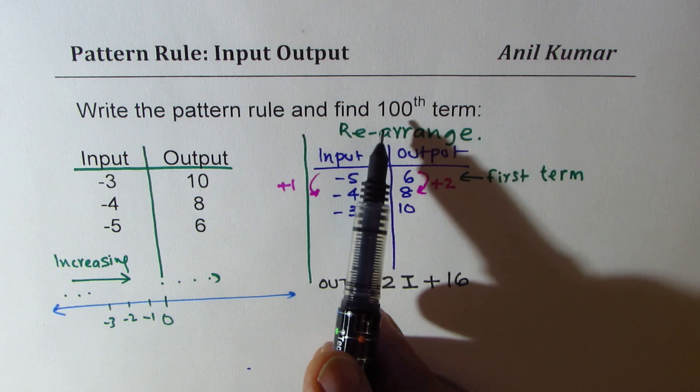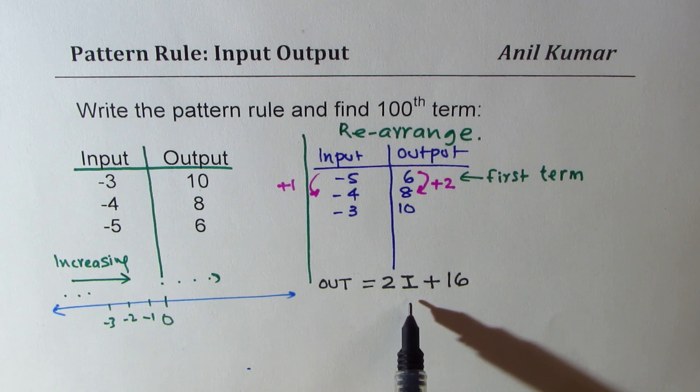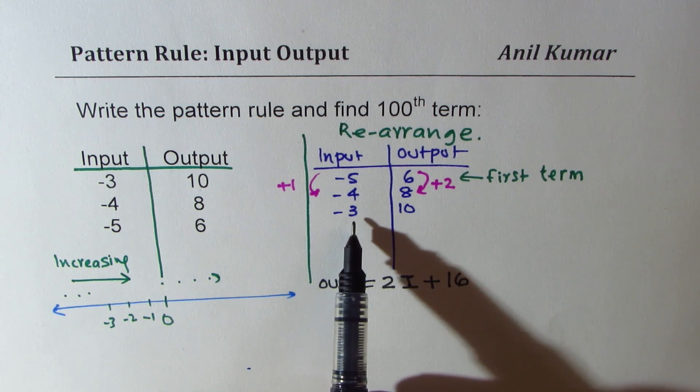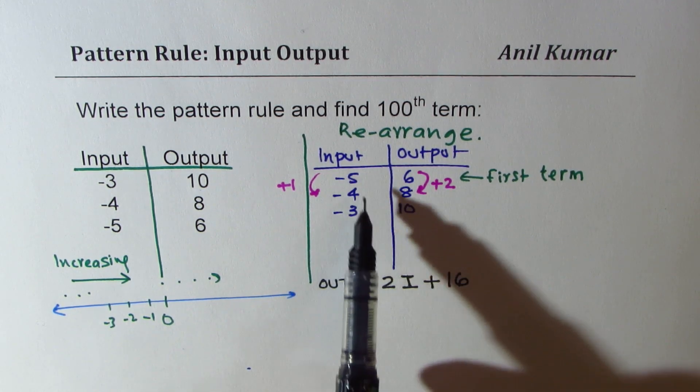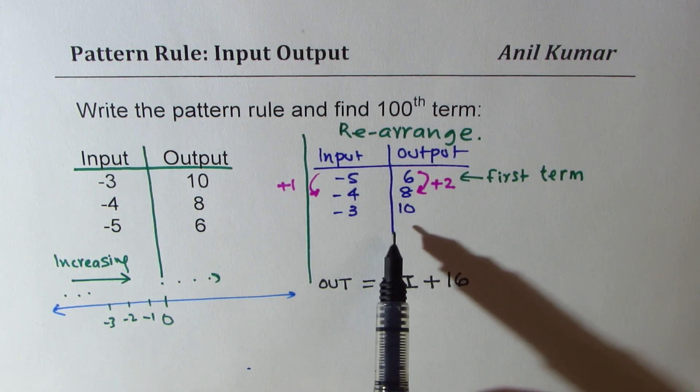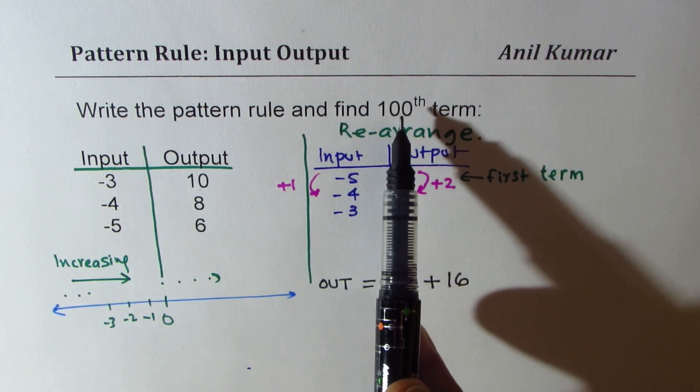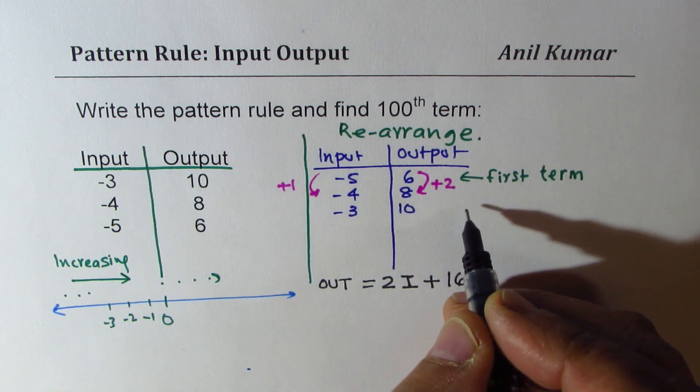Now to get the hundredth term there are different ways to do it. If I substitute hundred here will that be the right answer? No. Because we actually started with minus five. We did not start with zero. So the input for the hundredth term will not be hundredth but it will be what?